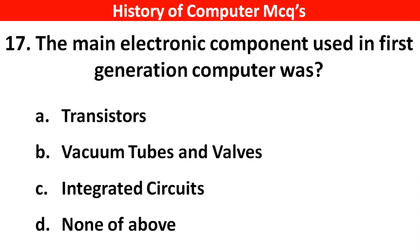Next question. The main electronic component used in first generation computers was — Options A: Transistors, B: Vacuum tubes and valves, C: Integrated circuits, D: None of the above. Right answer is option B, Vacuum tubes and valves.